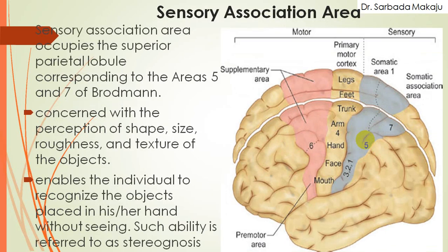The sensory association area occupies the superior parietal lobe, corresponding to area number 5 and area number 7 of Brodmann's areas. The function of areas 5 and 7 is that they are concerned with the perception of the size, roughness, and texture of objects. This area enables the individual to recognize an object placed in his or her hand without seeing it — such ability is referred to as stereognosis.